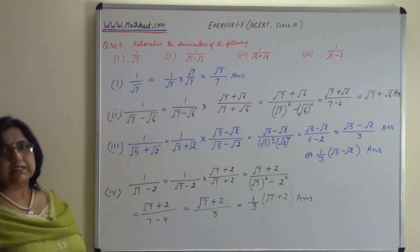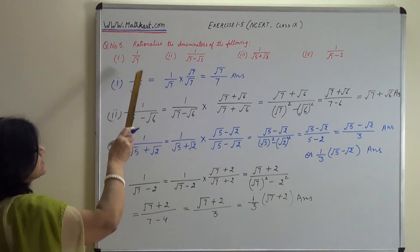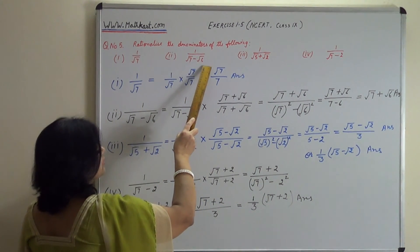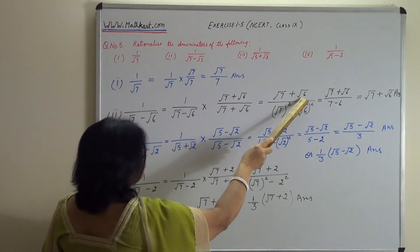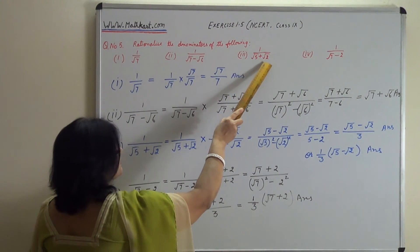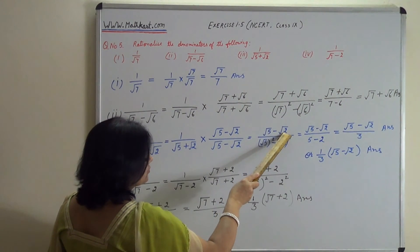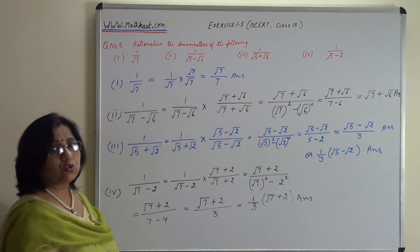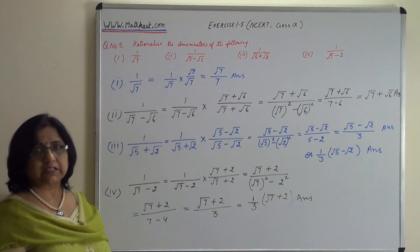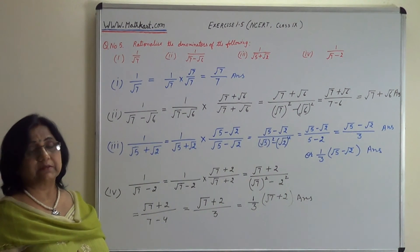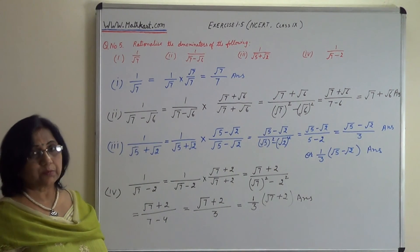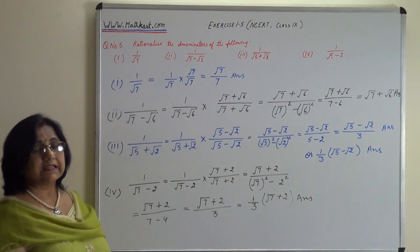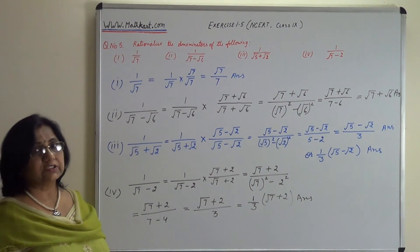अगर numerator में 1 है तो जब binomial से multiply करें — जैसे root 7 minus root 6 है तो root 7 plus root 6 आएगा numerator में, root 5 plus root 2 है तो root 5 minus root 2 आएगा। Denominator में जिस sign के साथ binomial लिखा हो उसका opposite sign numerator में आएगा। अगर numerator 1 से ज़्यादा हो तो भी opposite sign होगा लेकिन numbers बदल जाएंगे।